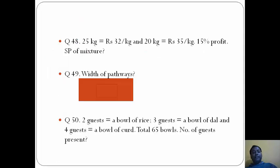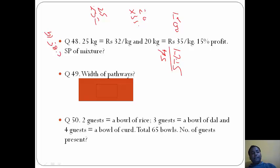Question 48: 25 kg of rice at Rs 32 per kg, so we calculate 25 into 32. Then 20 kg of rice at Rs 35 per kg, that is 20 into 35. Total we get is around 1500. Profit is 15 percent, so total selling price is Rs 1725. Selling price of mixture: 1725 upon 45, and the answer we will get will be B, that is 38.33.